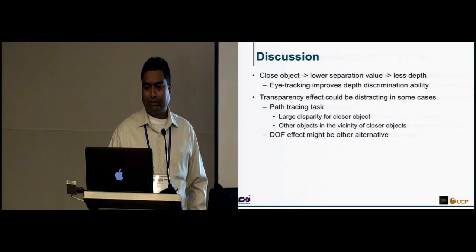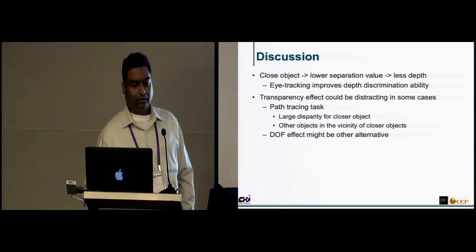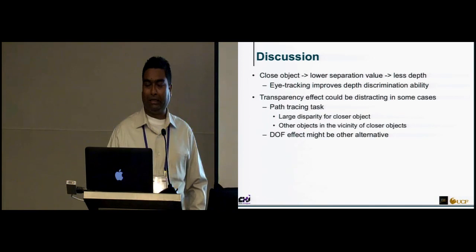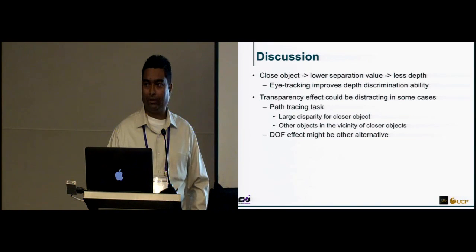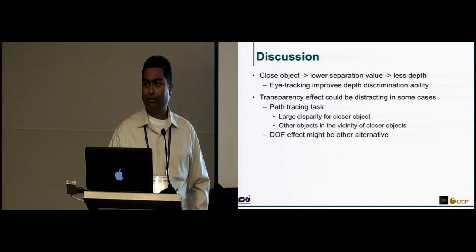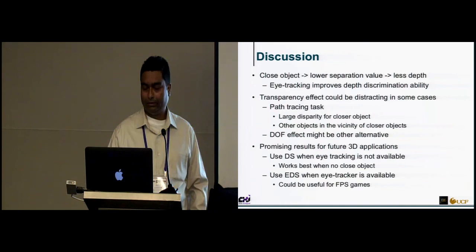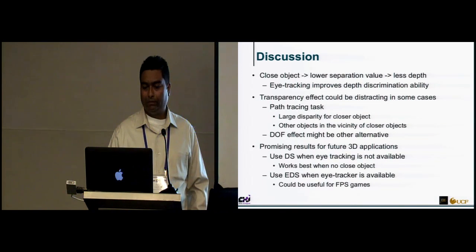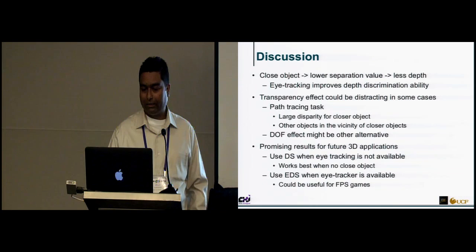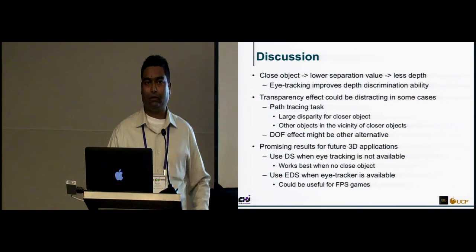We used a transparency effect to avoid discomfort for closer objects, but it was distracting to users in some cases, especially when other objects were close to the closer object. An alternative is to explore depth of field effect, which might help. These results are promising for future 3D applications: dynamic stereo works best when there is no closer object and no eye tracker is available, while eye-tracked dynamic stereo is useful especially for first-person shooter games where a gun is always close.